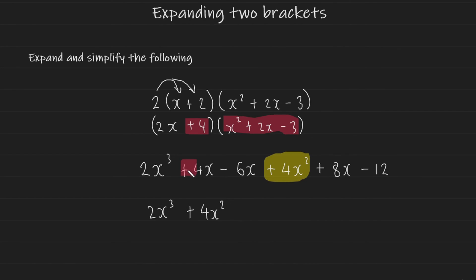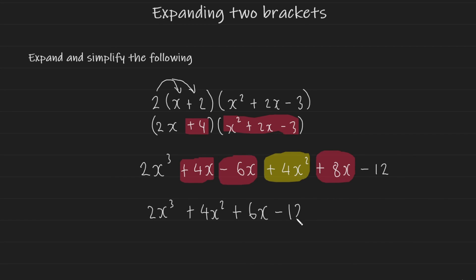And now I'm going to collect my x's. I have plus 4x, minus 6x, and a plus 8x. And if I combine them, plus 4x plus 8x is plus 12x, minus 6x, which will just give me plus 6x. And of course we have the minus 12 at the end, which we can just bring down and attach to the expression like this. And there you have it — this is your final simplified expression from expanding two brackets.